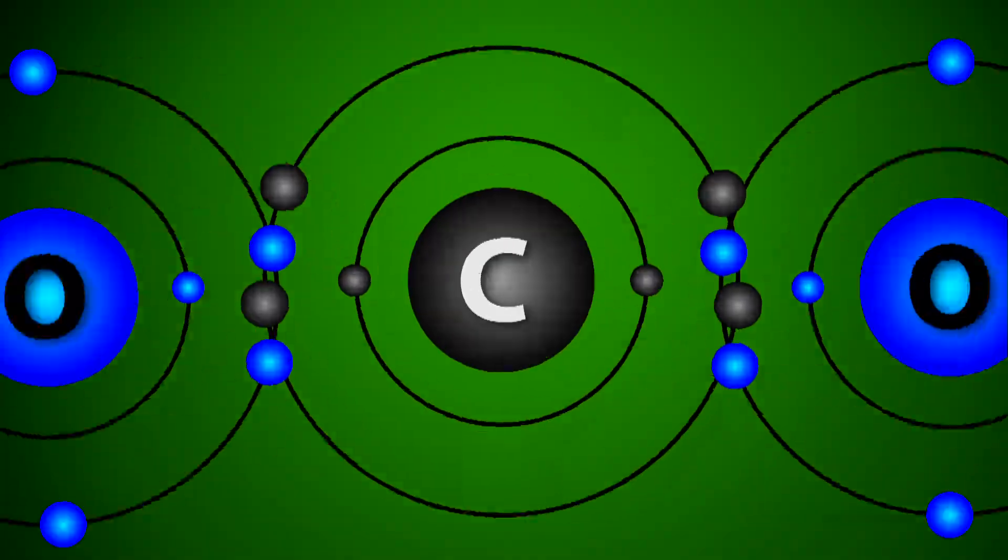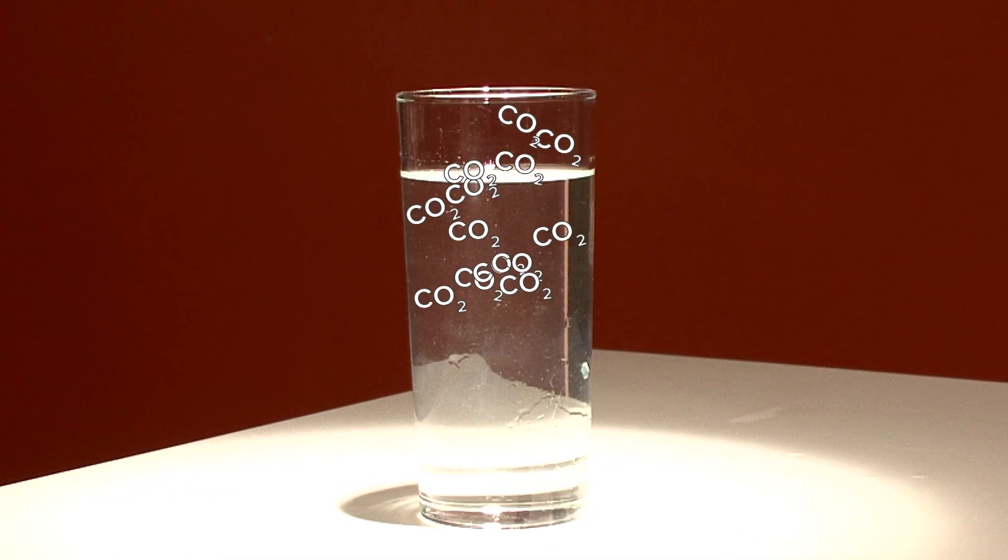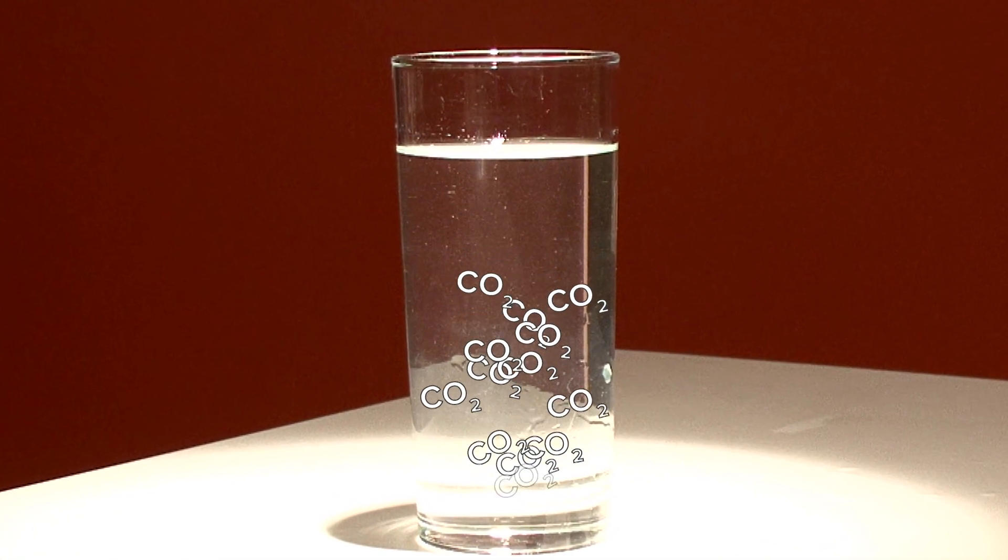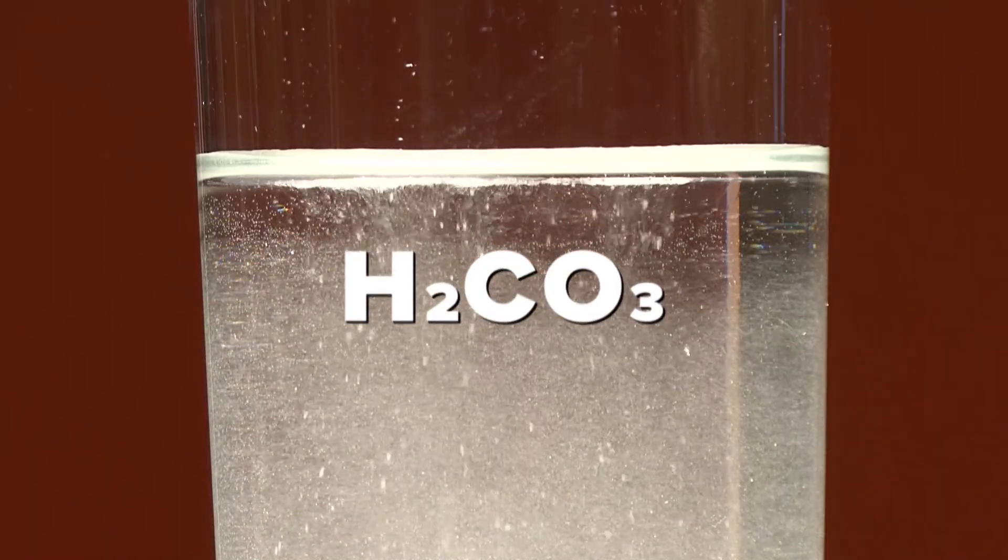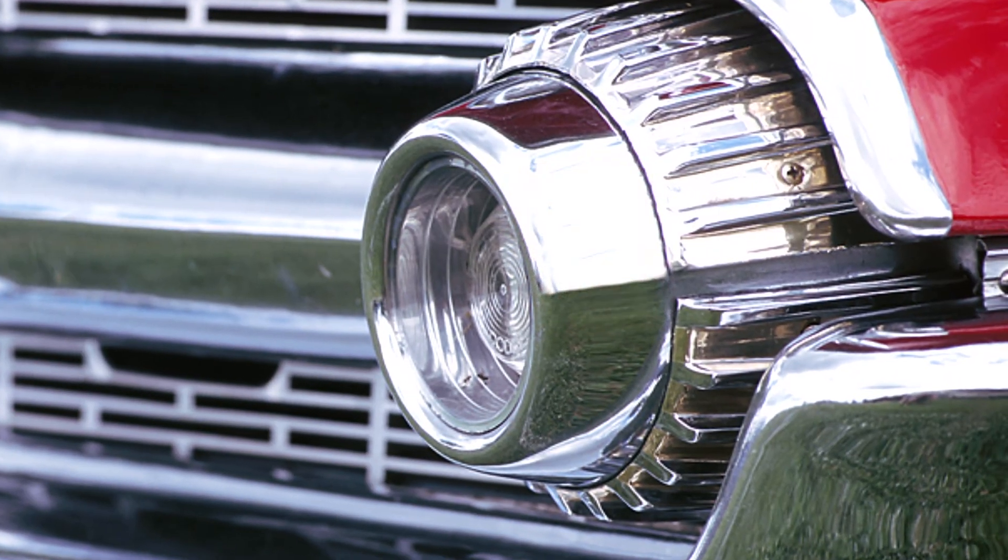In the oceans? Well, quick rewind to making carbonated drinks. Remember, by dissolving CO2 into H2O? That, logically enough, makes H2CO3, also known as carbonic acid, a weak acid, although strong enough to remove rust from chrome.